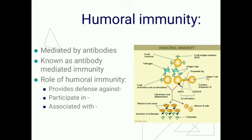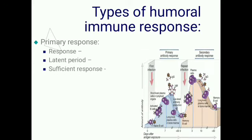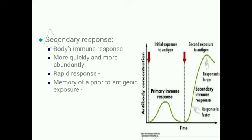Humoral immunity is also associated with autoimmune diseases. Types of humoral immune response: there are two varieties — primary and secondary response. The primary response is the response of the body's immune system to an antigen introduced for the first time. It has a long latent period, maybe from four days to four weeks, and the response is less than the secondary response, but sufficient to limit the level of antigen.